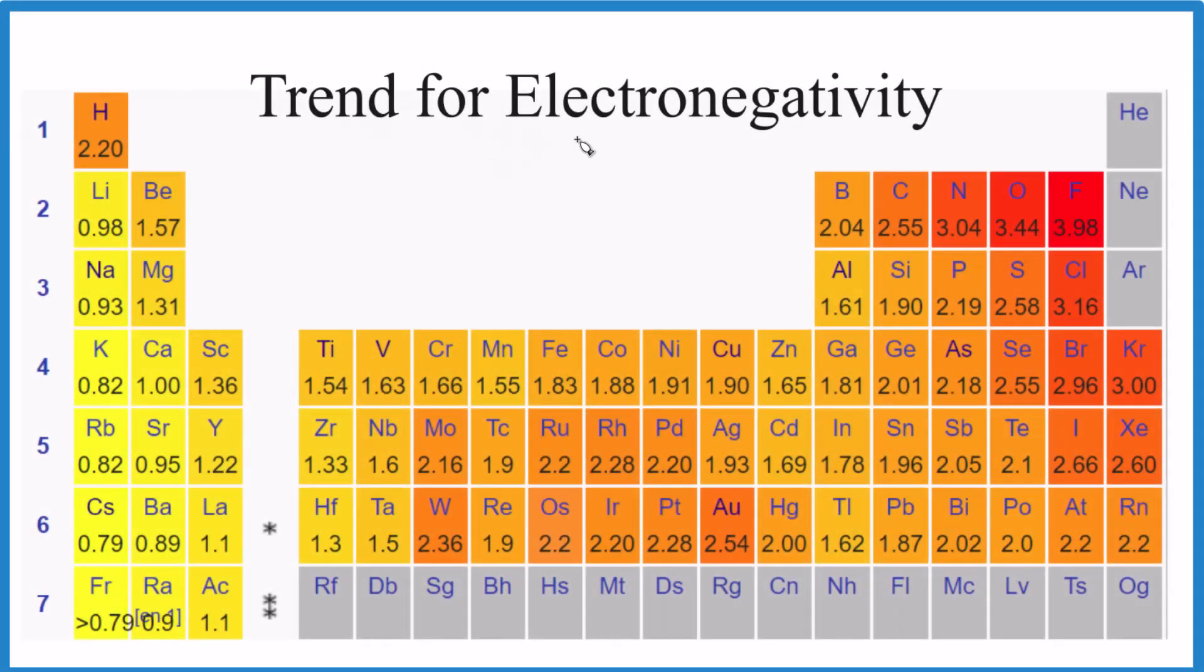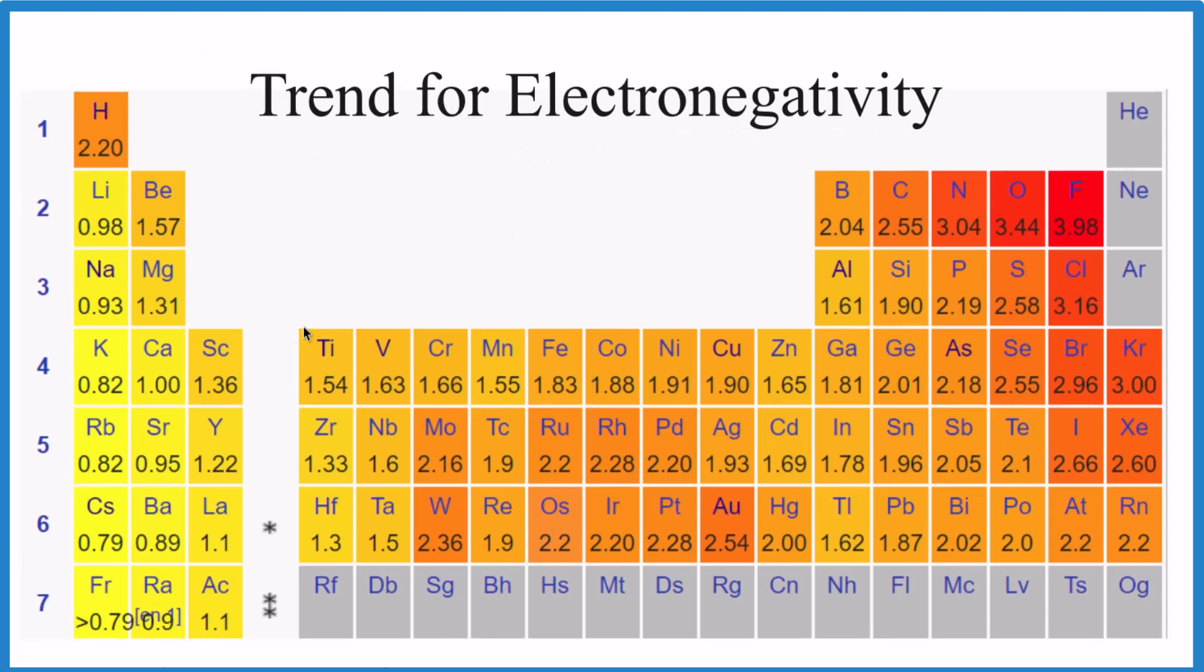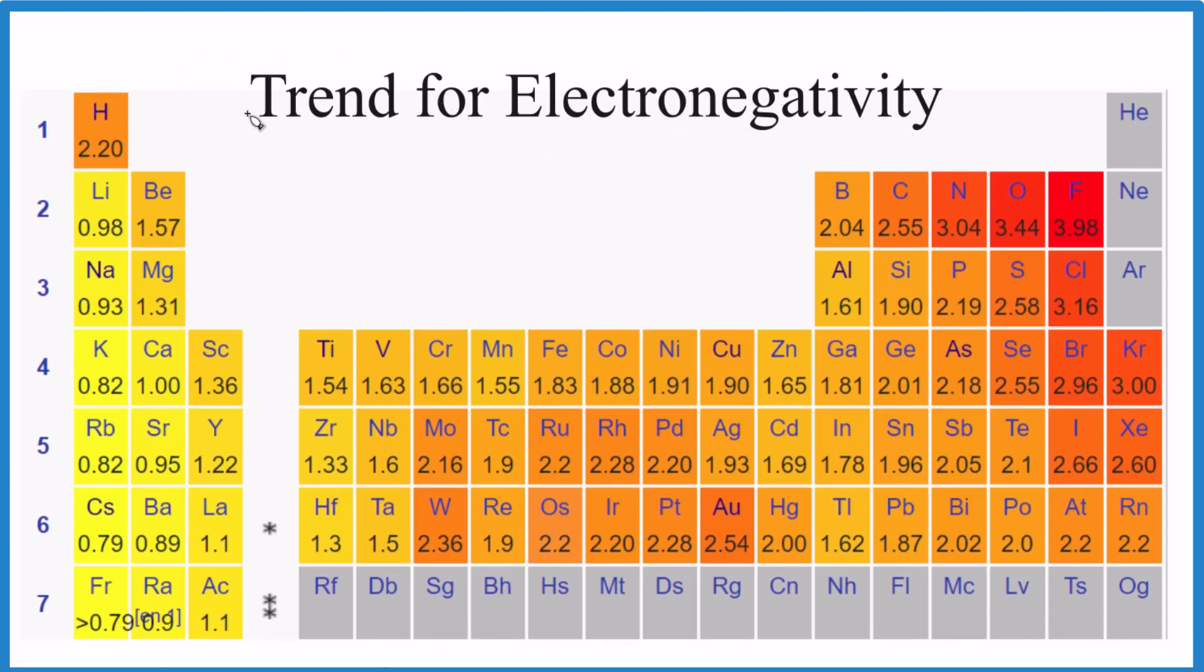So let's take a look and see how we can visually represent the trend for electronegativity here on the periodic table. What's the best way that we can show how electronegativity changes across the different elements?